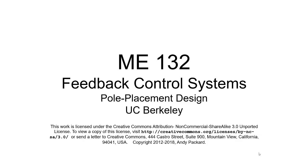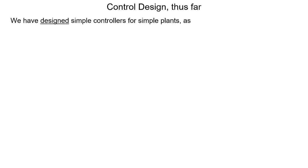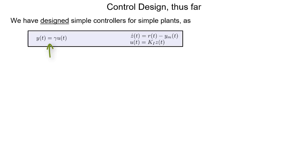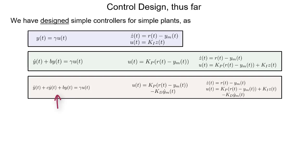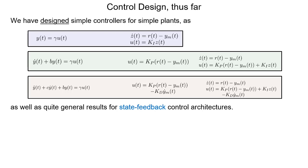This lecture covers pole placement design for single-input, single-output feedback systems. Thus far, we've designed simple controllers for simple plants, starting with a constant gain plant controlled by an integral controller — case two in the early part of the course. Before that, we considered a first-order plant controlled with a proportional controller, and also a proportional-integral controller when we moved on to higher-order closed-loop systems. Then we considered a second-order plant controlled with a PD controller, then a PID controller. We also considered more general results for state feedback control architectures once we knew the matrix exponential and how to analyze high-order systems.